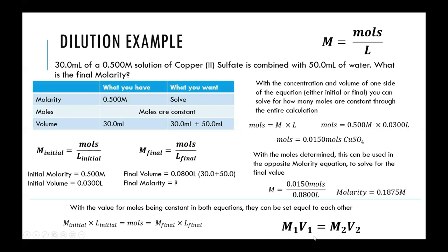This simplified equation is used only in dilutions. It has no other use anywhere else — just when you're diluting something — because in this case moles are constant, and therefore the ratio between moles and liters varies and affects the concentration in an inverse way.